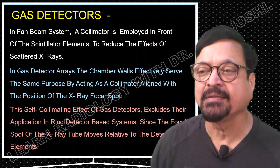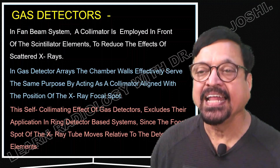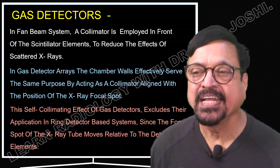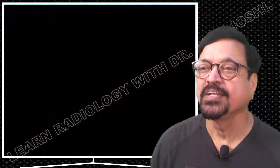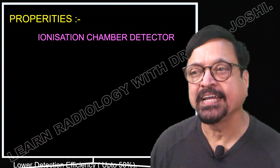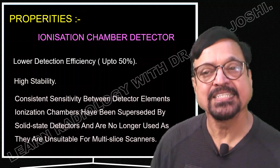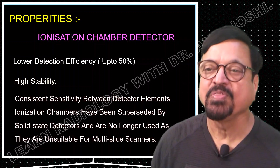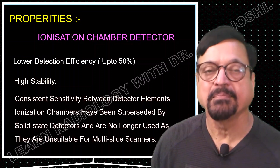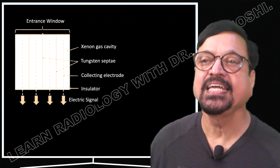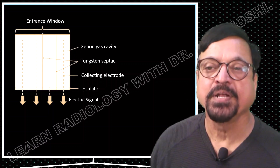The self-collimating effect excludes gas detectors from ring detector-based systems, since in those systems the focal spot of the X-ray tube moves relative to the detector element. These detectors are no longer used today — they were used in the past. Their properties included lower detection efficiency, maximum up to 50%, but they were highly stable with consistent sensitivity between detector elements. Ionization chambers have been superseded by solid-state detectors and are no longer used as they are unsuitable for multi-slice scanners. You can see the entrance window and exiting signals, and due to their septation they also act as collimators.